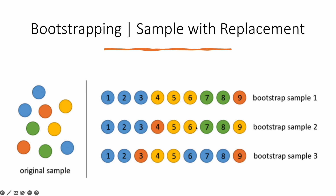Similarly, we do random sampling to create bootstrap sample two and bootstrap sample three. Since this is randomly selected with replacement, there are more blue balls in bootstrap sample three than in one and two. Also, there is only one orange ball in bootstrap sample one, while bootstrap sample three has two orange balls. This is the concept behind bootstrapping, also called sample with replacement, and it is essential for understanding the bagging technique.